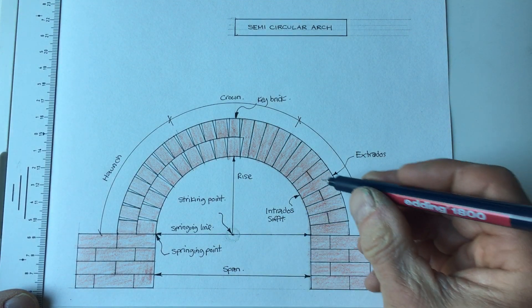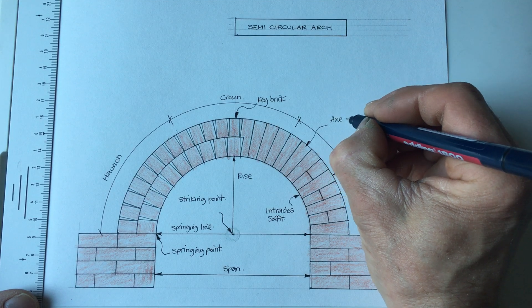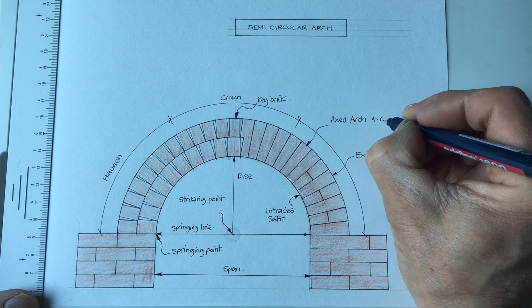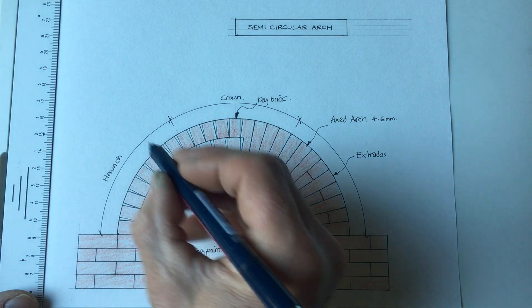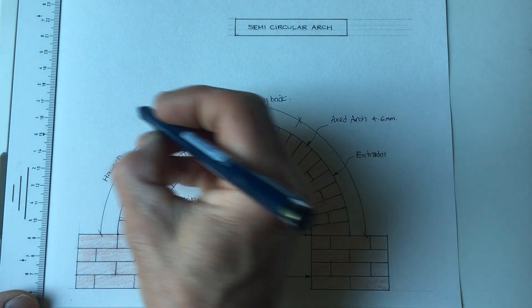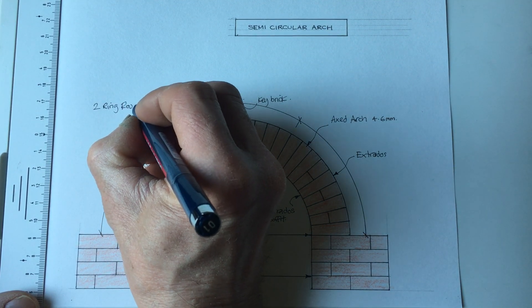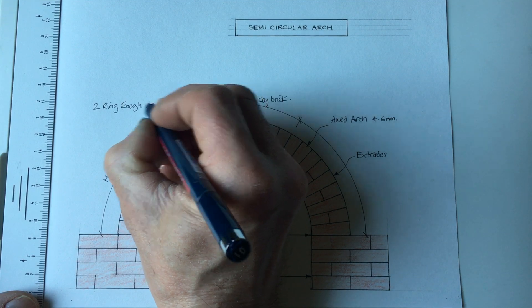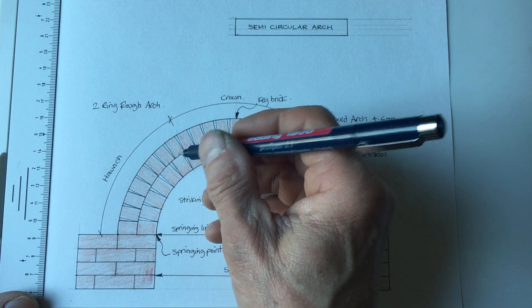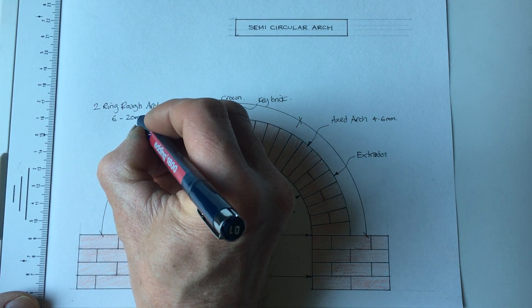As we said before, this is an axed arch where the axed arch has four to six millimeter joints. This we're two rings here, so although it's a rough arch, it's a two ring rough arch because we've got two on there. And as we said before, the joints from here vary from six millimeters to about 20 millimeters. Anything bigger than 20 starts to look quite awful.